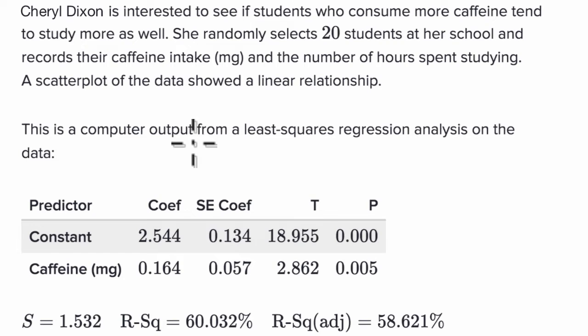This is a computer output from a least squares regression analysis on the data. So we have these things called the predictors, coefficient, and then we have these other things, standard error of coefficient, t and p, and then all of these things down here. How do we make sense of this in order to come up with an equation for our linear regression?